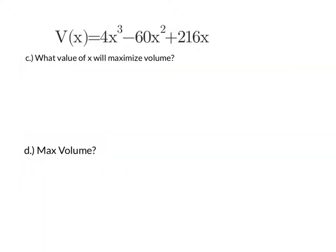Knowing a function for the volume of that box, we can maximize the volume by looking at its derivative. So I'm going to take a look at the derivative of volume, which will be 12x² - 120x + 216. The value of x that's going to maximize the volume is going to be the critical number for this function, so we take the derivative and set it equal to 0.